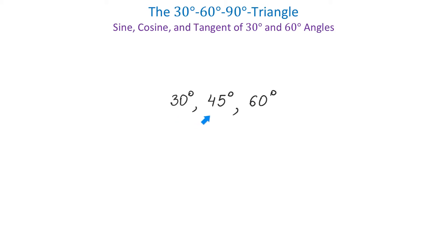The angles of 30, 45, and 60 degrees are frequently used in trigonometry, and many times we refer to them as special angles. In this video, we will talk about the special angles of 30 and 60 degrees and the values of sine, cosine, and tangent of these angles.